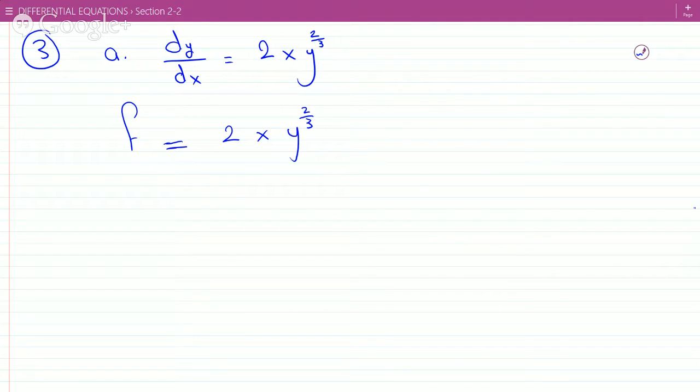But then if you differentiate this, what do you get with respect to y? You would get four-thirds x, y to the minus one-third, which would make it four-thirds x over y to the one-third.